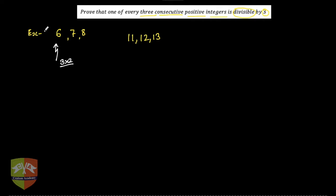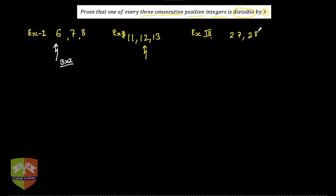These examples help us verify whether what is given is actually valid. Example three could be twenty-seven, twenty-eight, twenty-nine — yes, twenty-seven is divisible by three. Another example, example four, could be one hundred one, one hundred two, one hundred three — again, one hundred two is divisible by three.